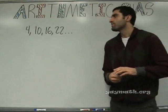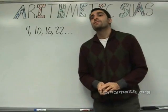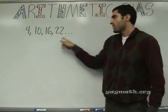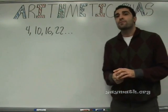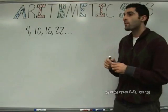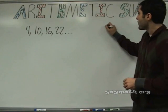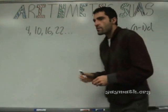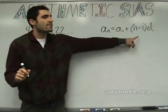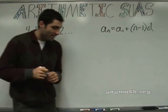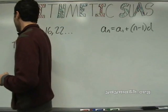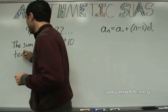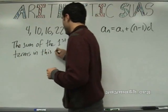Is this an arithmetic sequence? Yes. How do we know? It goes up by 6. It goes up with addition, not multiplication, which we're going to do later. So if I were to ask you to get the 10th term, or the 20th term, or the 100th term, we can do that. There is a formula for it: A_N equals A1 plus N minus 1 times D. This gives you the formula for any term in the sequence. I want to get the sum of the first 10 terms in this sequence.